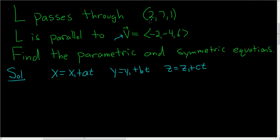And in this problem, X₁ is 2, Y₁ is 7, and Z₁ is 1. And this is our A, this is our B, and this is our C. These are called direction numbers, and V is often called the direction vector. So all we have to do is just carefully plug in the numbers.